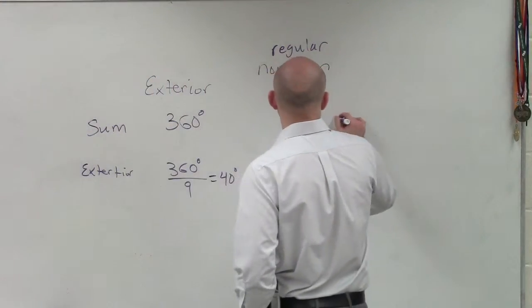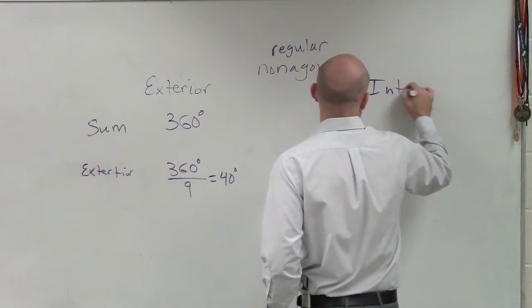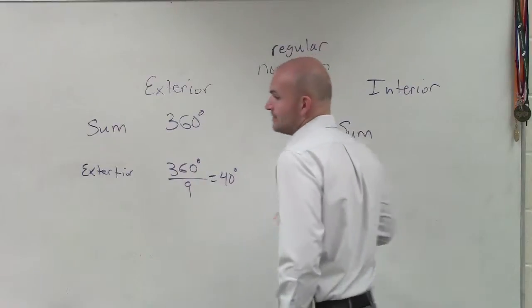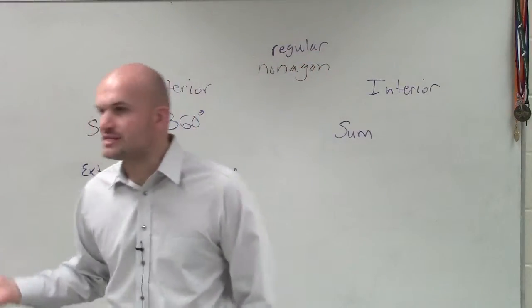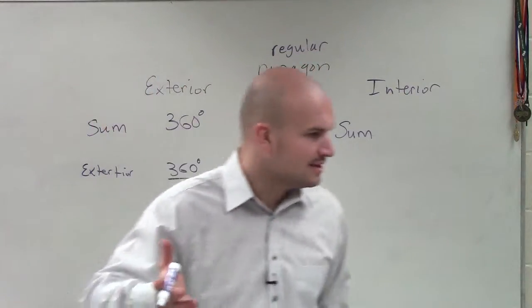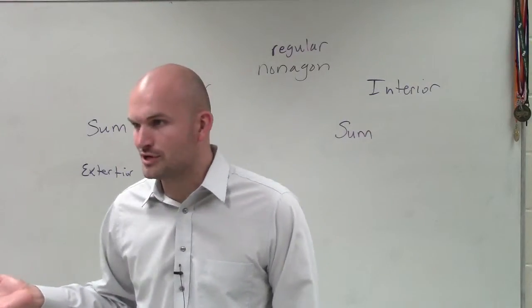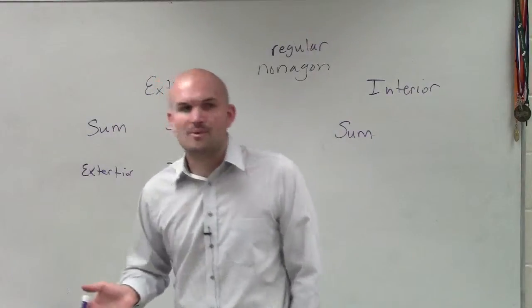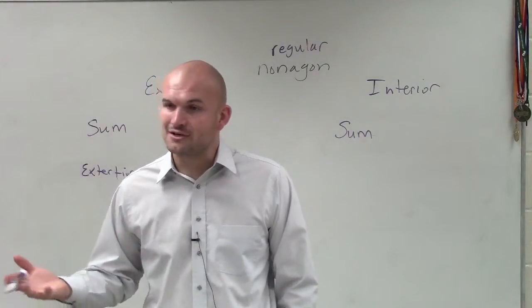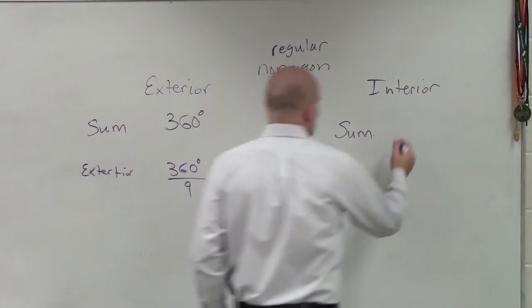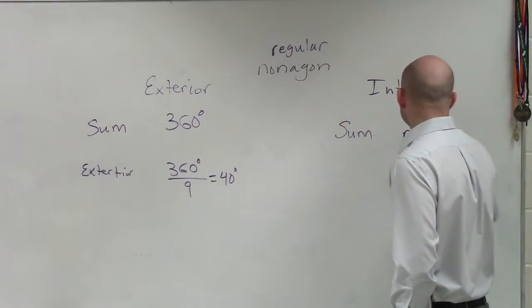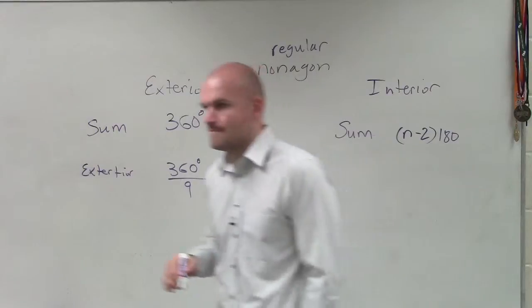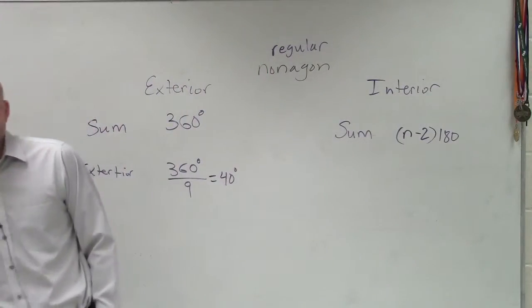Now let's talk about interior. Interior is a little bit different because when we're trying to deal with the sum, what's so nice about exterior is we always know the sum is 360. It doesn't matter if it's a 300 gone, right? Remember that review question, what is the sum of exterior angles of a 200 gone? I don't know. It's always 360. But for interior angles, it's a little bit different. And if you guys remember, to find the sum, we had to use this formula, right?